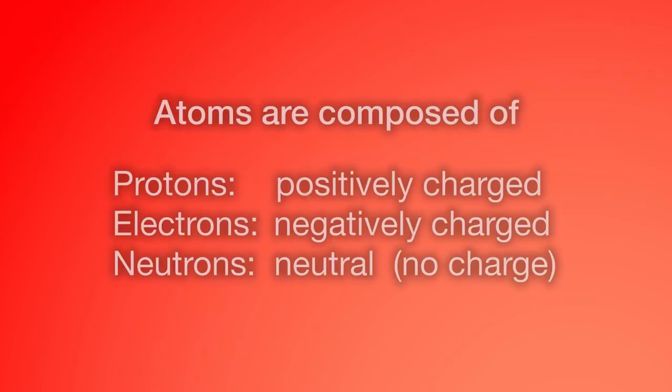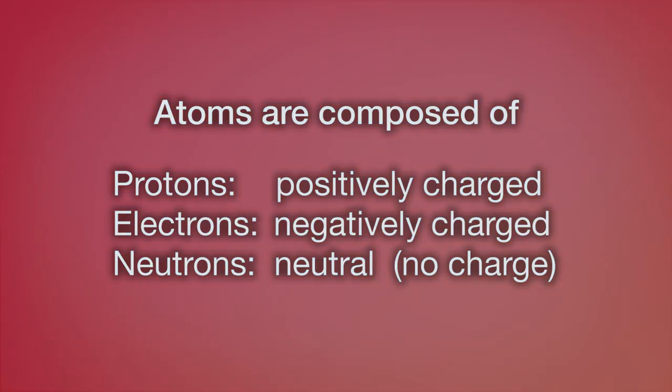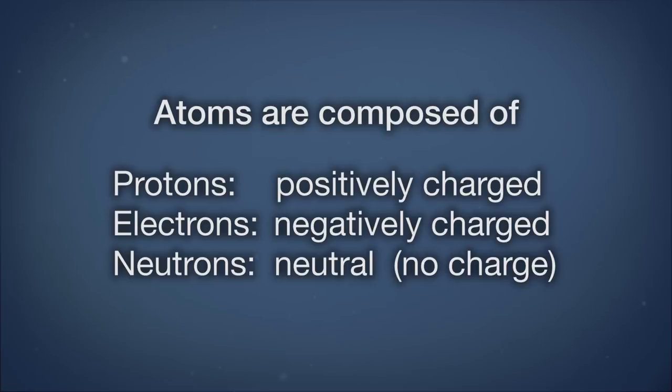Atoms can be broken down into even smaller components called protons, electrons, and neutrons. Protons are positively charged, electrons are negatively charged, and neutrons are neutral. Much of environmental science is studying how matter flows or does not flow between different systems.